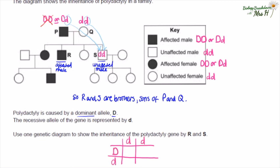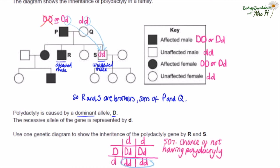We can now complete the one genetic cross with parents dd and Dd. Completing the cross, you can see that there is a 50% chance each time P and Q have a child that their child will have polydactyly, and a 50% chance they will not.